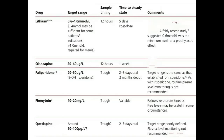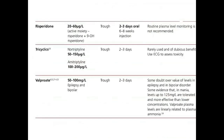Quetiapine: target range around 50–100 mg per liter; sampling time trough; time to reach steady state 2–3 days; target range is not fully defined and plasma level monitoring is not routinely recommended. Risperidone: target range is 20–60 mg per liter; time to reach steady state 2–3 days oral and 6–8 weeks for injection; routine plasma level monitoring is not recommended.